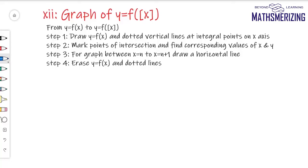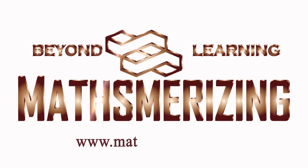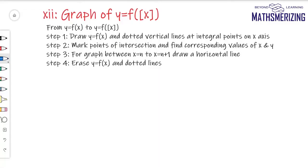Now we'll move to the next set of transformations involving the greatest integer function. From the graph of y = f(x), I have to draw the graph of y = f(⌊x⌋). What you already know is if x lies between n and n+1, then ⌊x⌋ equals n. So I'll draw the graph of f(x) and then draw vertical lines at integral points on x.